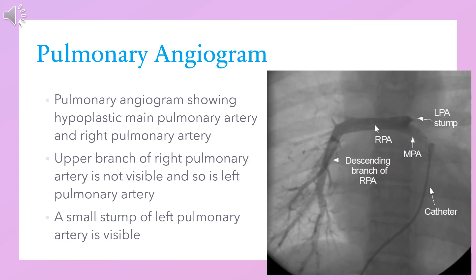This is a pulmonary angiogram obtained by injecting contrast dye into the main pulmonary artery. A catheter – that is, a small tube – was introduced into the main pulmonary artery through the right femoral vein.